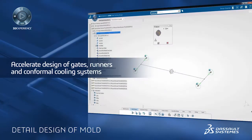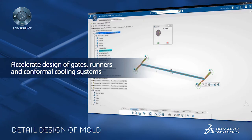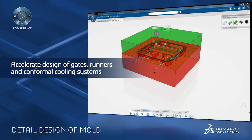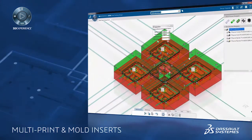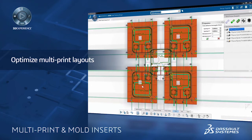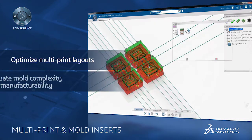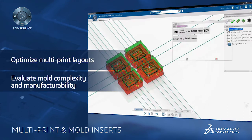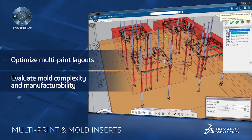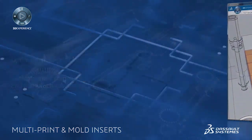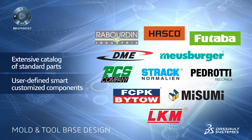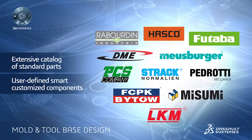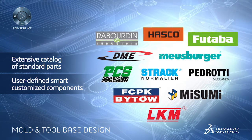Rich process-specific capabilities are also provided to quickly define mold features such as inserts, gates, runners, and both conformal and drilled cooling systems to accelerate the overall mold design process. It's also possible to quickly define and optimize multi-print layouts of the mold, and then use dedicated capabilities to define, position, and optimize mold components such as lifters and ejectors through rich 3D simulation. Mold and tool design is further accelerated through the use of an extensive catalog of mold supplier standard parts and user-defined parts to speed up the design process while reducing errors.